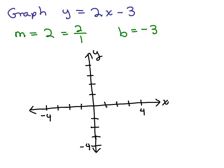I'm going to do a rough sketch of the graph, but I suggest you use real graph paper. Always remember to mark the x and y-axis and at least one number on each axis. We're going to start by plotting where it crosses the y-axis, because that's one point on the line. The y-intercept is (0, negative 3), so we plot that point.